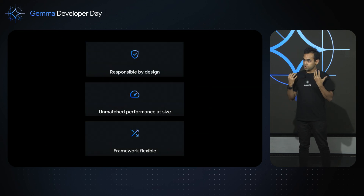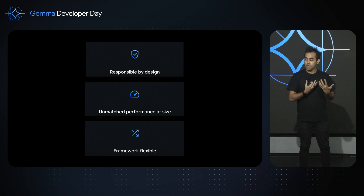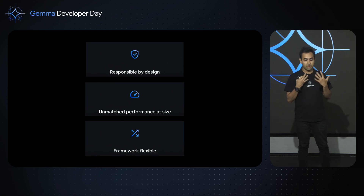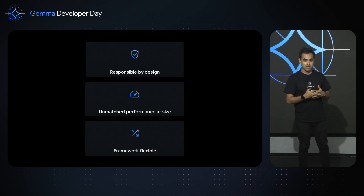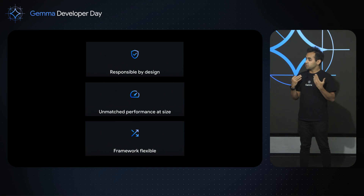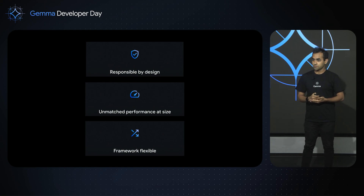PaliGemma is responsible by design — it's all about ethically sourcing image data as well as text data and having accountability for where our information comes from. It's about performance and having the best model in class for its size. And finally, it's about giving you the flexibility so that no matter what framework you use — whether it's JAX, PyTorch, or Keras — you have options available to you.